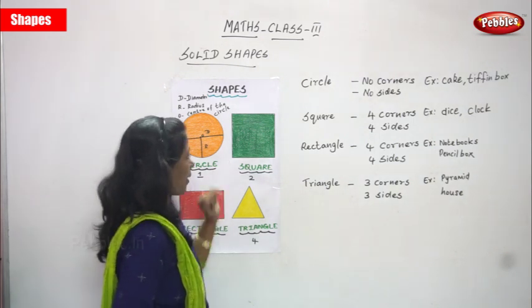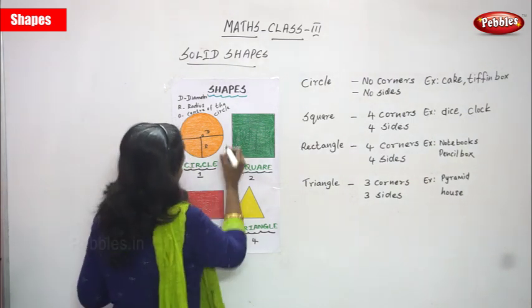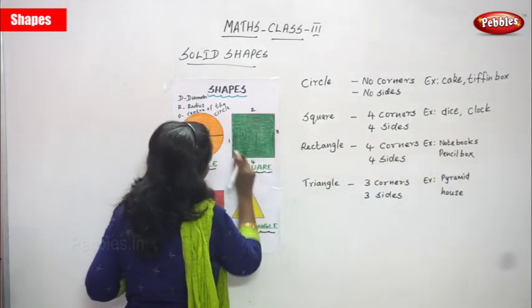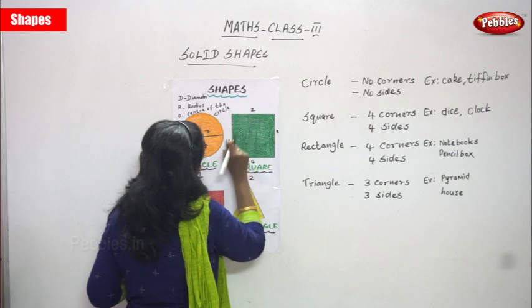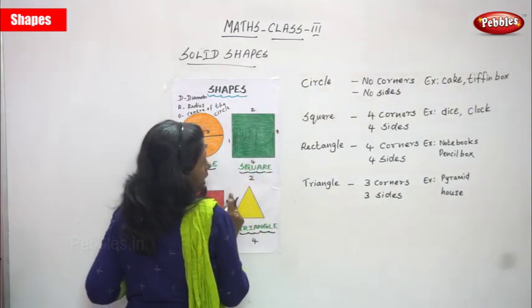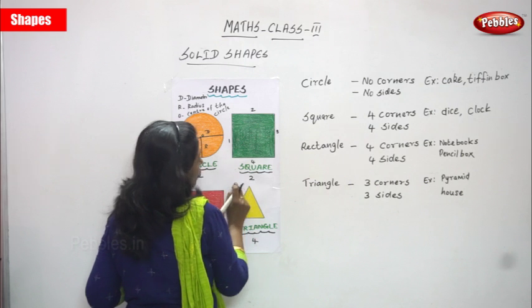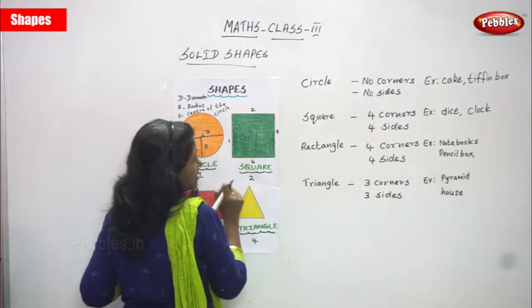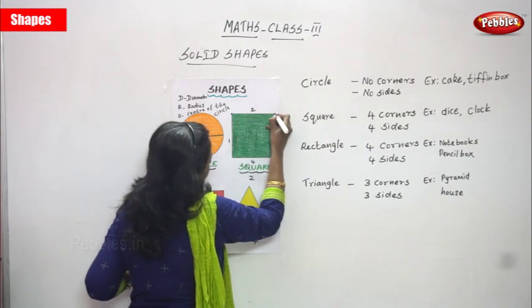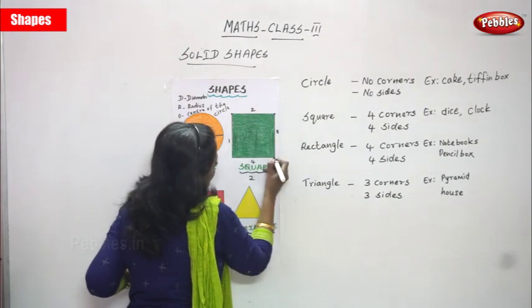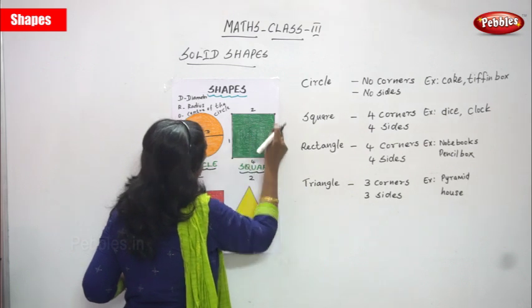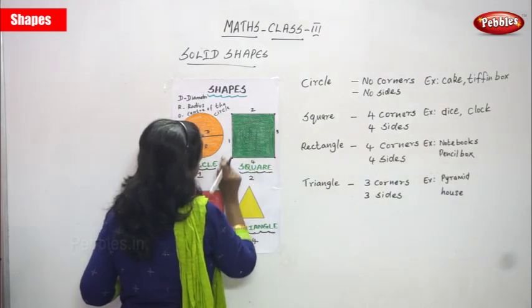The next one is square. It has four corners — one, two, three, and four — and four sides — one, two, three, and four. The corners are also called vertices. So four corners and four sides.